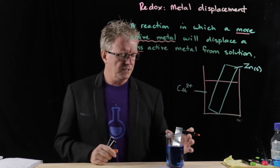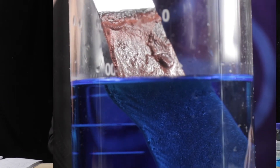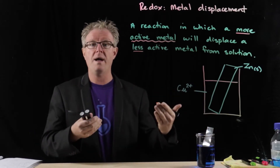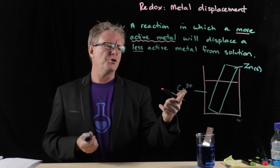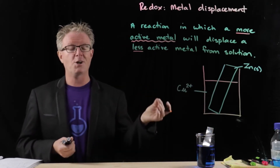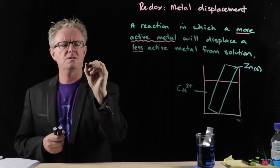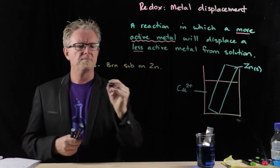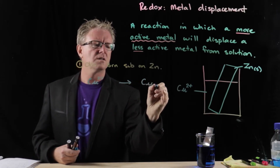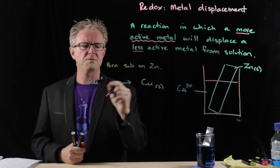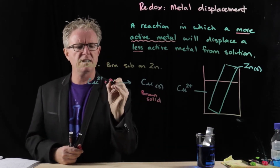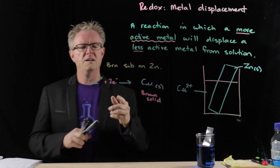If I lift this up very carefully, we'll see what's going on. You can see there is a brown deposit on the outside of the metal. We know that copper is a browny sort of substance, so we can infer that copper is somehow forming solid copper. The first observation is a brown substance on the zinc.